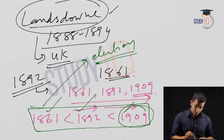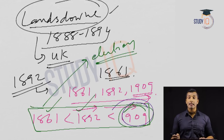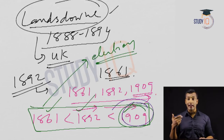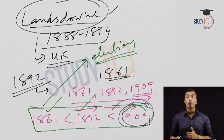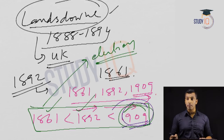In one word, the importance of the Indian Council Act 1909 is that some Indians are going to be elected as well as nominated in the assemblies, both at the centre and at the state level. We will be discussing 1909 in more detail as it is more important for us.